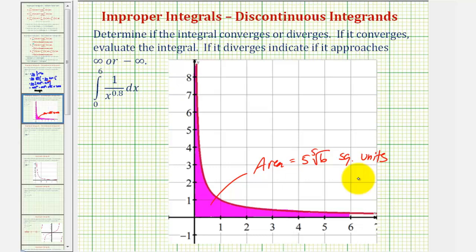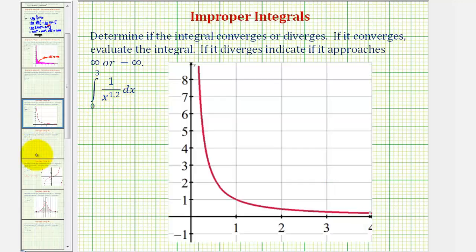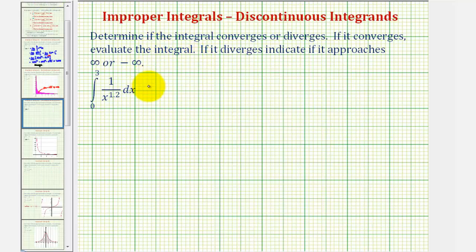Let's take a look at a second example. This one looks very similar — again, notice how the function is discontinuous or undefined at x equals zero. We can verify this by looking at the graph and notice how we have an infinite discontinuity at x equals zero. So we'll write this as the limit as c approaches zero from the right of the integral from c to three.